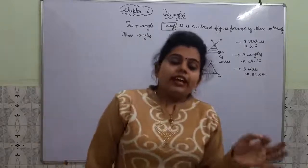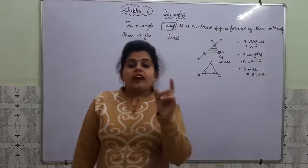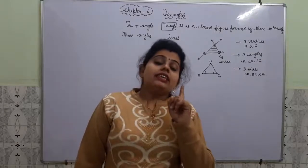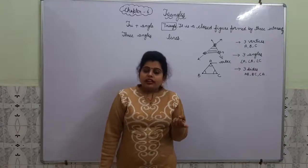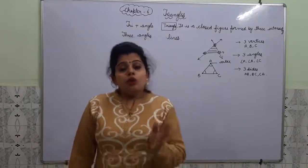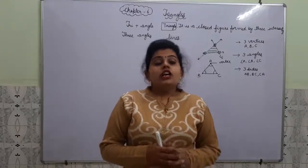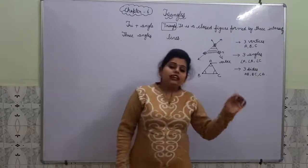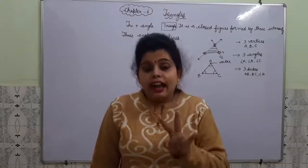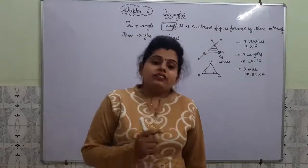We can classify triangles on the basis of angles and on the basis of sides. On the basis of angles: if all angles are less than 90 degrees it is an acute angle triangle; if one angle equals 90 degrees it is a right angle triangle; and if one angle is more than 90 degrees it is an obtuse angle triangle. On the basis of sides: if all 3 sides are equal it is an equilateral triangle; if any 2 sides are equal it is an isosceles triangle; and if all sides are unequal it is a scalene triangle.